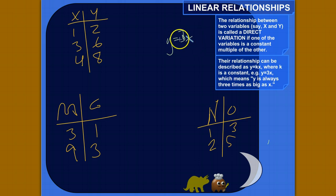And the other way, you can look at this as x is always 1 third as big as y. You can look at it that way, too. So if one is always a constant multiple of the other, then there's a direct variation.